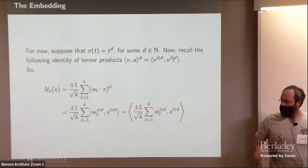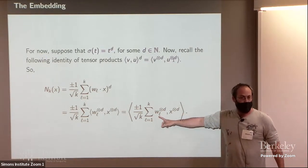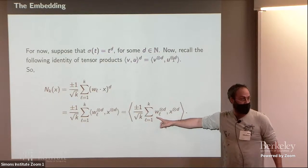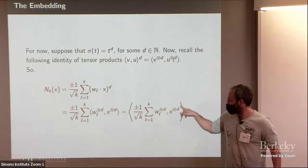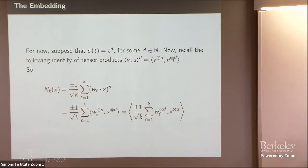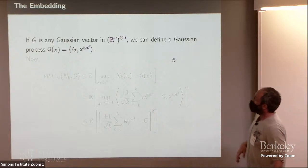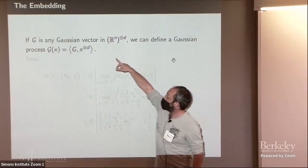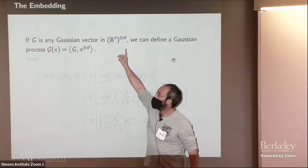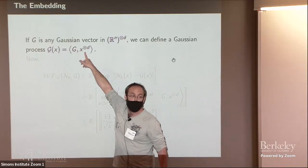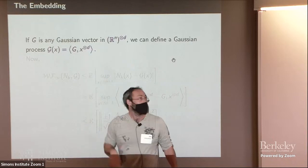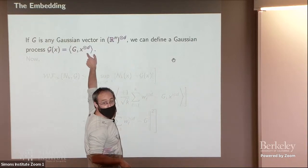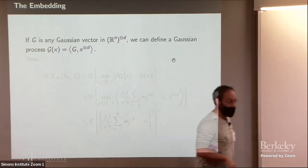So the way to embed the network in a finite dimensional space is, right, if this is the activation and we are summing K of those guys, we can rewrite this term just as an inner product in the tensor space, use linearity. And here we have a random vector in some high dimensional, but finite dimensional Euclidean space and we're just tensoring. We're taking its inner product with some tensor power. And this gives a natural definition for a Gaussian process, right? Because now let's define a Gaussian process by just taking any Gaussian vector in the tensor space and taking its inner product with the vector X.